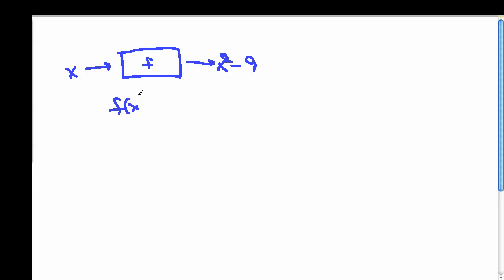We might write this as f of x equals x squared minus 9, more like a formula. But all this means is if I have a particular number in mind, and I want to run it through this machine, the output I'm going to get by squaring the input and then subtracting 9.